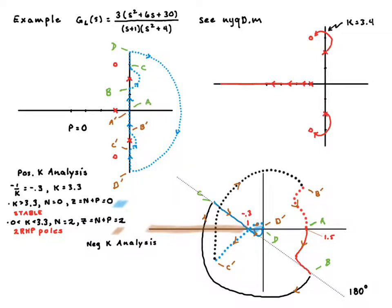Now let's do negative K analysis. So we do a similar thing. We take a look at this point. That's at 1.5. And we then claim that that's our negative 1 over K. So K is equal to negative 2 thirds at that point. So for K less than negative 2 thirds, that's the purple region. We have one right half plane pole. We can see that by drawing a ray out like so. We have one encirclement, one right half plane pole.